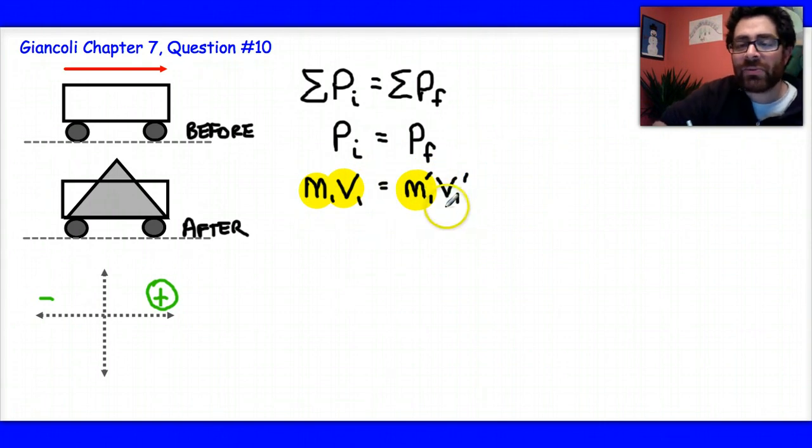I'm simply looking for the velocity of the cart after the collision. So let's go ahead and solve for that variable. I'm now going to get the mass of the cart times the velocity of the cart before the collision divided by the mass of the cart after the collision. And I'm already ready to substitute. So let's go ahead and do that.